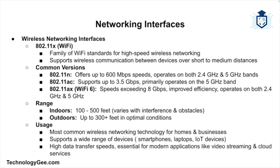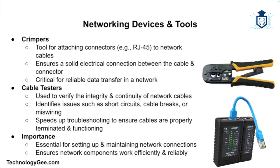802.11x, also known as Wi-Fi, is a family of Wi-Fi standards that provides high-speed wireless networking. The most common versions are 802.11n, 802.11ac, and 802.11ax, also known as Wi-Fi 6. These versions support speeds ranging from a few hundred megabits per second to over 9 gigabits per second, with indoor range of around 100 to 500 feet and outdoor range extending up to 300 feet. Wi-Fi is the most prevalent wireless networking technology for home and business use.